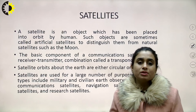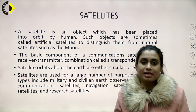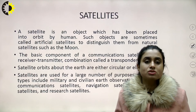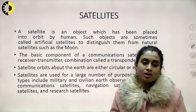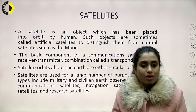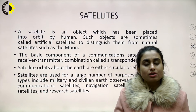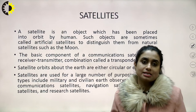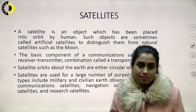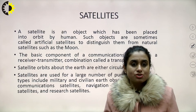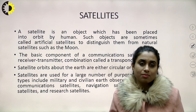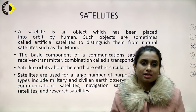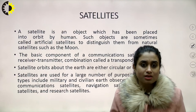The basic components of a communication satellite are a transmitter and a receiver combination, which is called a transponder. Satellites usually orbit around the Earth in either a circular or elliptical path. The most accepted path is elliptical, whereas there are exceptions — geostationary satellites follow a circular path.